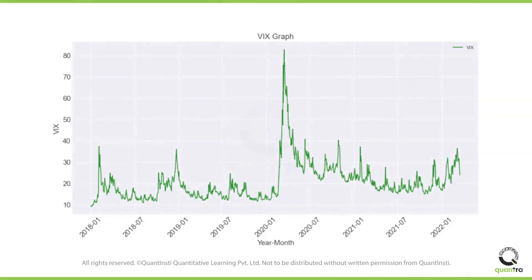The VIX graph is shown on the screen. As discussed before, you can see that during unexpected events, such as the US-China trade war, the VIX rose sharply. And then after a few months, it declined as well — we can say the volatility went down.